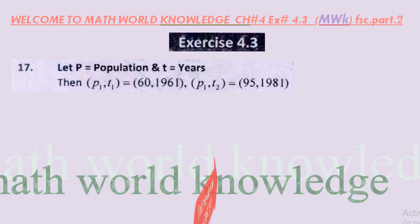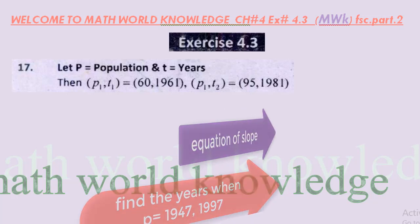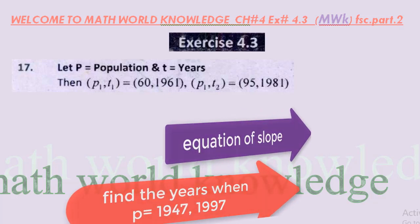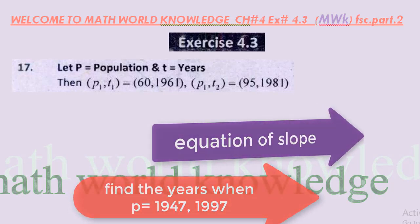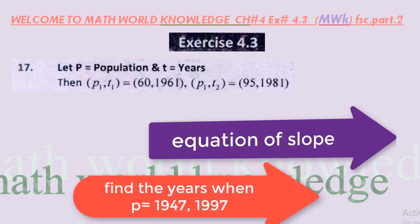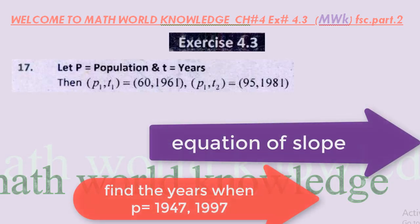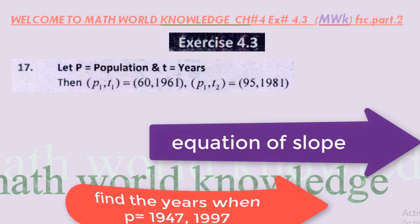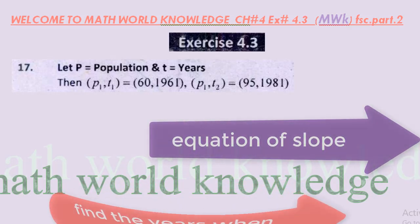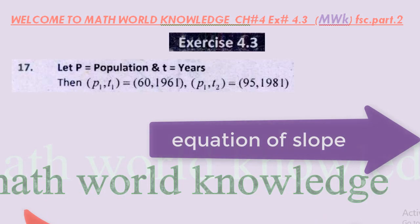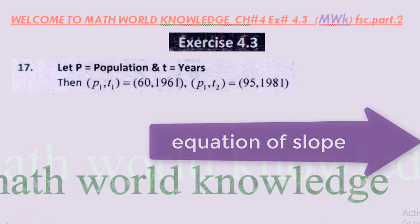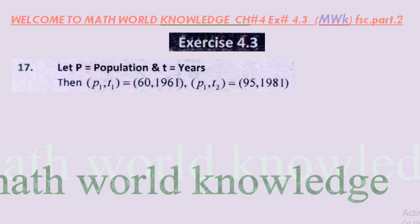For this purpose we can draw, first the population P and the second years t. Population can be denoted with p and years will be denoted with t. Then p1, t1 and p2, t2. P1 is the population, t1 is the years. P2 is the population, t2 is the years.